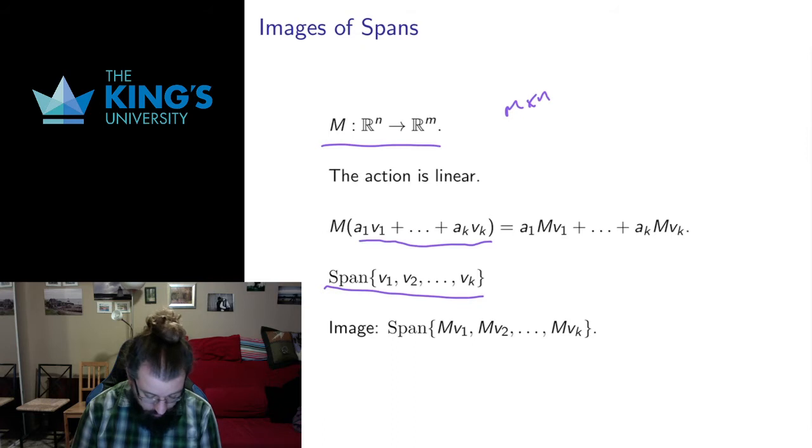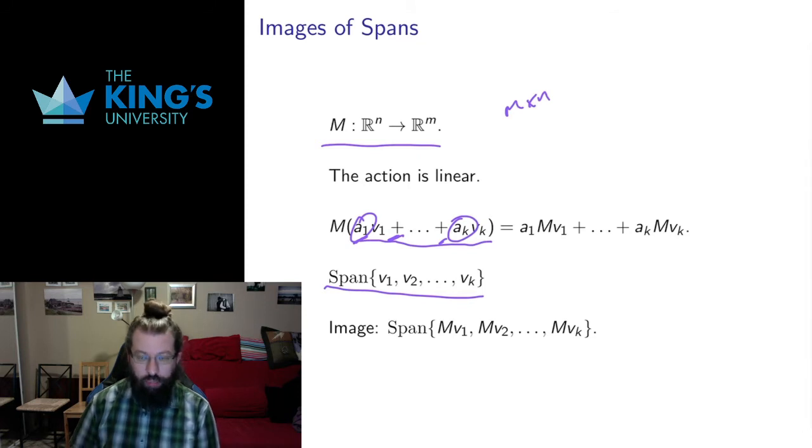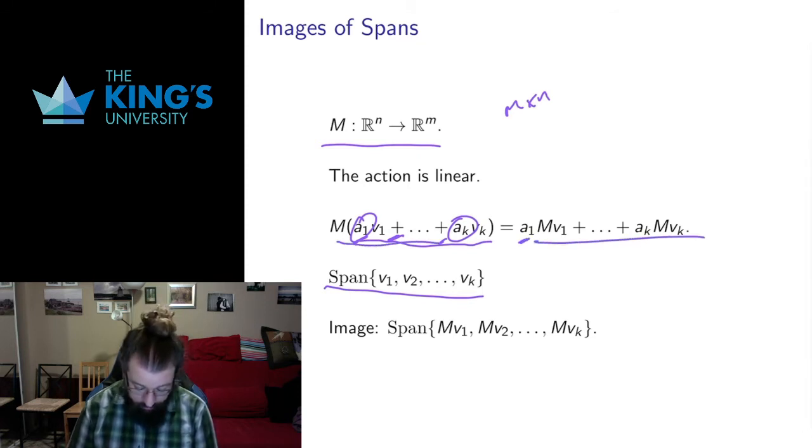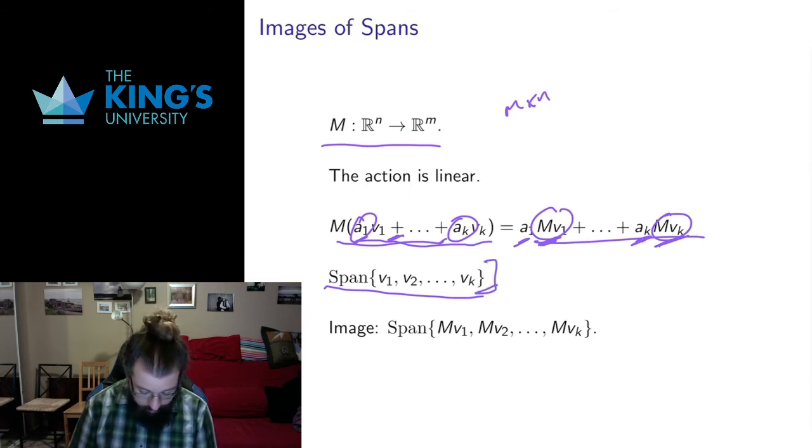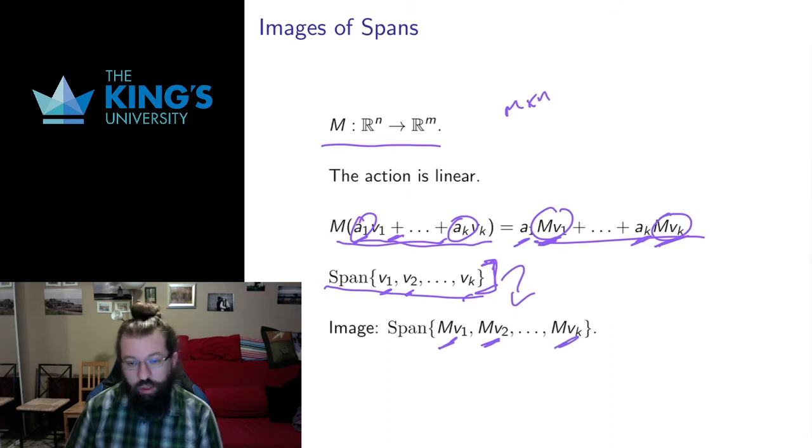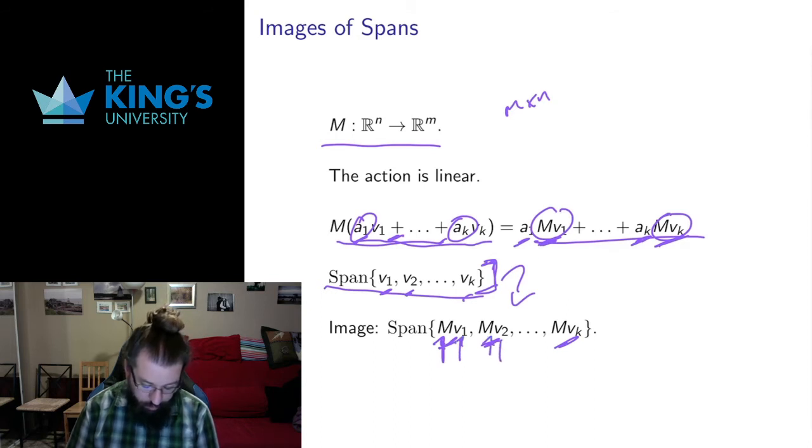But the action is linear, so this action can be split up over these additions, and these scalars, whatever these scalars are, can come out. So this action is the same as some multiple of M acting on v1 plus some multiple of M acting on v2 all the way down to some multiple of M acting on vk. So that's now a linear combination of these things. So anything that starts in the span here, any linear combination of the vectors v1 up to vk ends up as a linear combination of the vectors Mv1, Mv2 up to Mvk, and that's the matrix M acting on the vector v1, the matrix M acting on the vector v2, the matrix M acting on the vector vk.